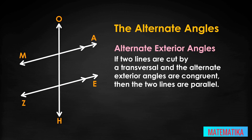So, if angle B and angle L are congruent, the lines are parallel. You could also only check angle C and angle K — if they are congruent, the lines are parallel. You need only check one pair.